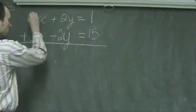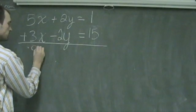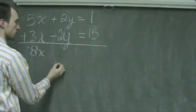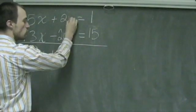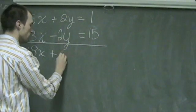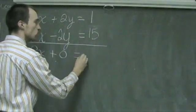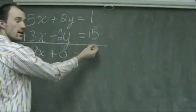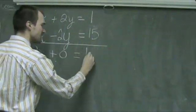what we're left with is adding down 5 plus 3 gives me 8 times x, plus 2y minus 2y is 0, and that's equal to 1 plus 15 or 16.